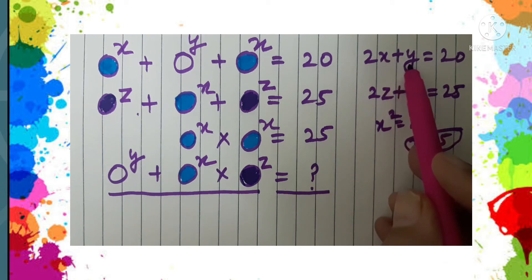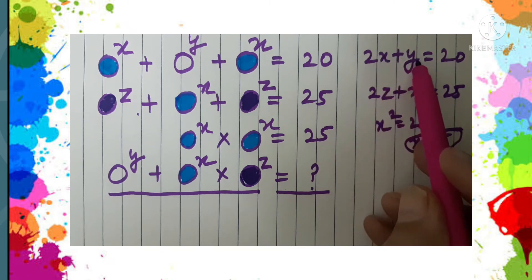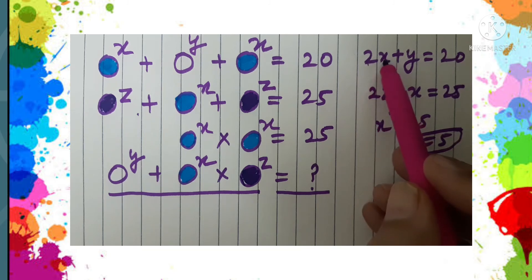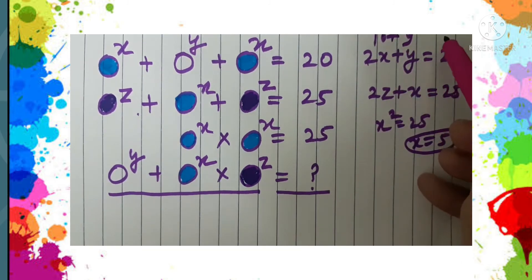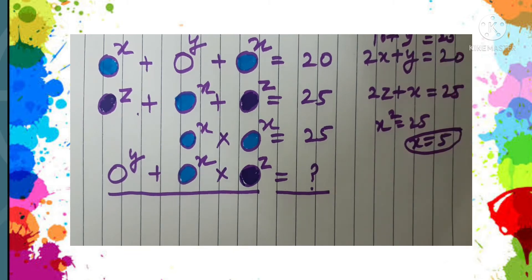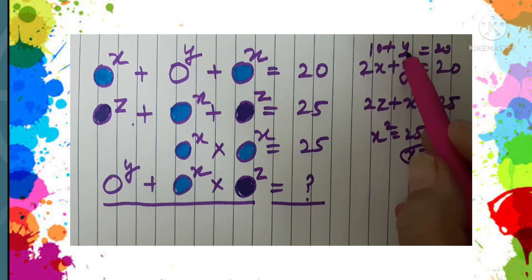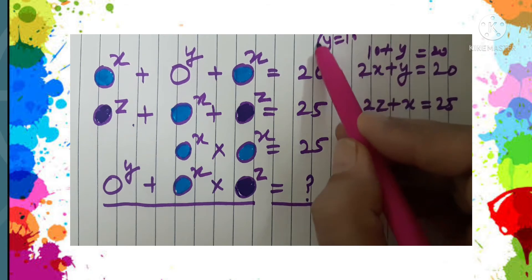2X plus Y is 20 and X is 5, so 2 into 5, that is 10, plus Y equals 20. From here we can get the value of Y, and the value of Y will come out to be 20 minus 10, that is 10. So Y is 10.